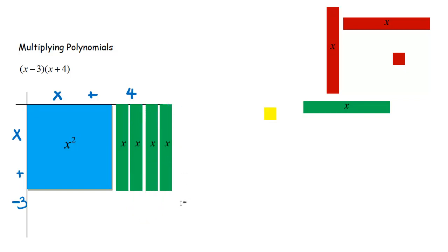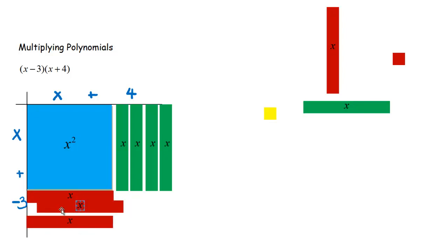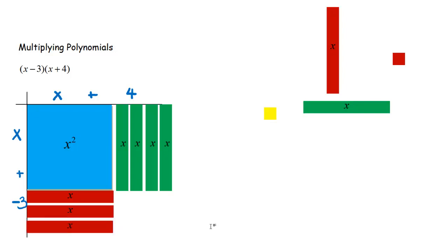There are our four x's — one, two, three, four — because four times x is four x's. Then x times negative three is negative three x. I need three of the negative x tiles: one, two, three. I space them out so everyone can see how many there are.